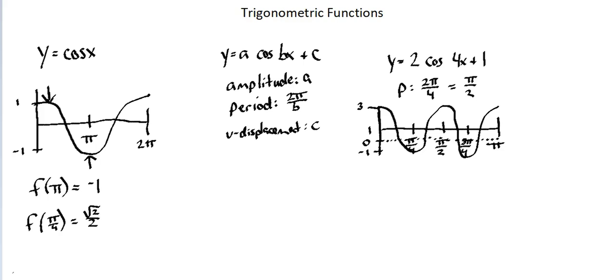I can evaluate the same inputs I did with y equals cosine of x. For function of π, my input value of π is 2 times cosine of 4π plus 1, which equals 2 times 1 (cosine of 4π is 1) plus 1. 2 times 1 is 2, plus 1 is 3. The input value of π gives me an output value of 3.